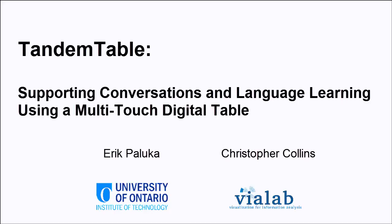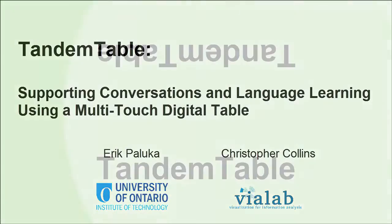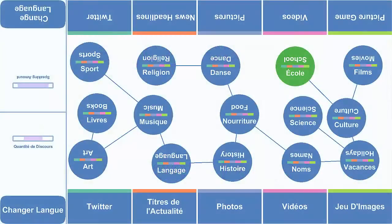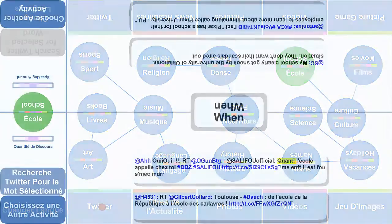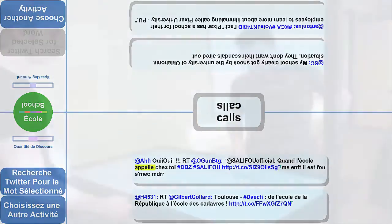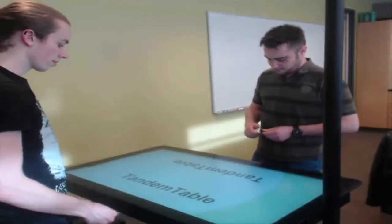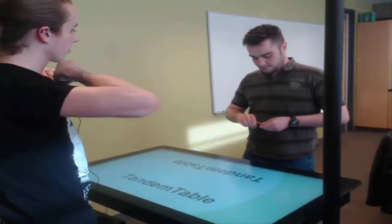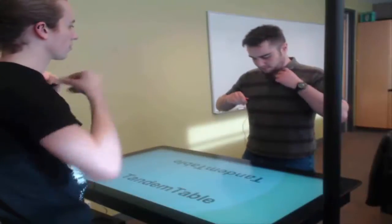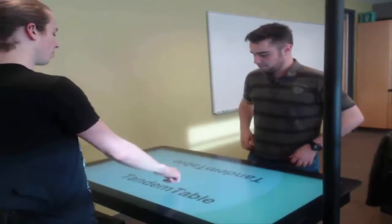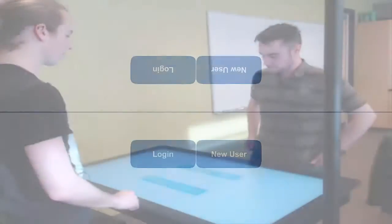We present Tandem Table, a multi-touch tabletop system which breaks down communication barriers between partners with a special focus on supporting those who speak different languages. Our system facilitates and supports conversations by suggesting topics of discussion and presenting partners with a variety of conversation-focused collaborative activities which consist of shared digital topical content that is dynamically downloaded from the web.